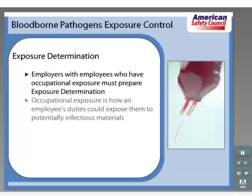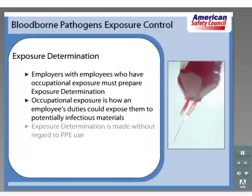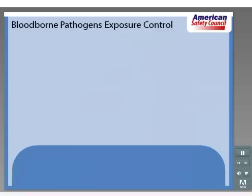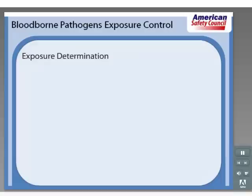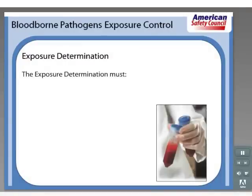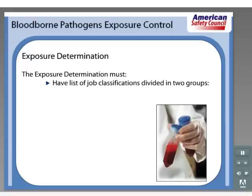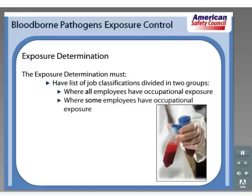So what does occupational exposure mean? Occupational exposure is how an employee's duties could expose them to blood or other potentially infectious materials. It is important to note that exposure determination must be made without regard to the use of personal protective equipment. The exposure determination must contain a list of all job classifications divided into two groups: those where all employees have occupational exposure, and those where only some employees have occupational exposure.